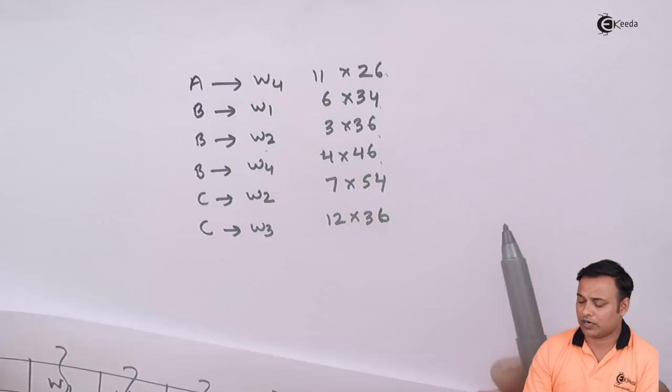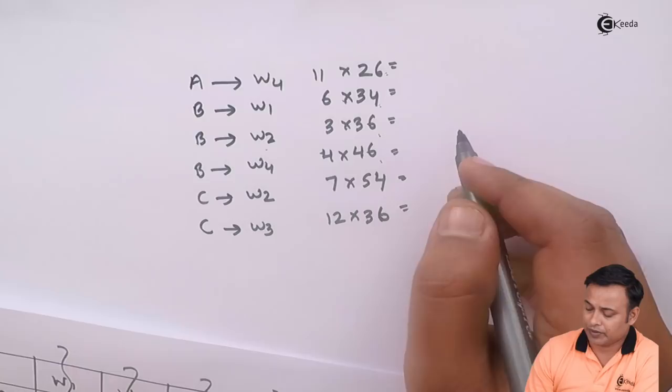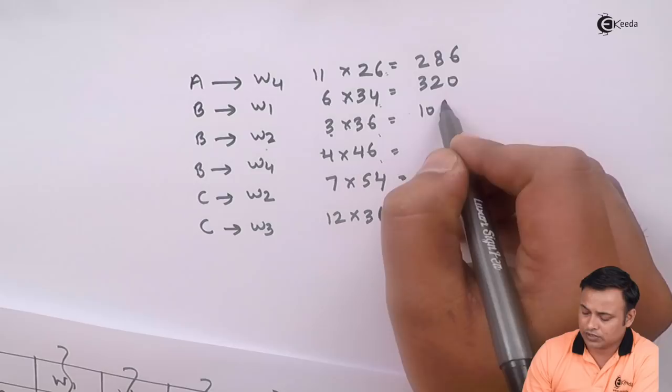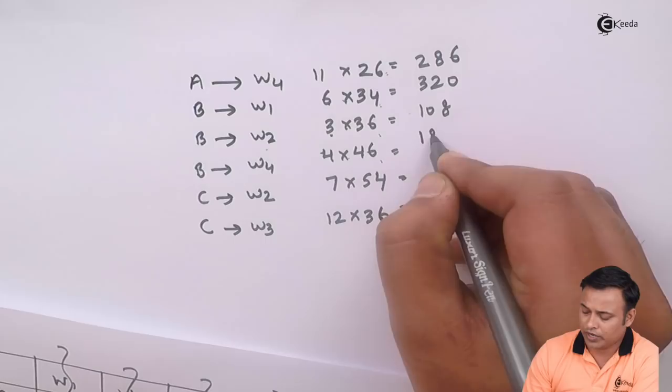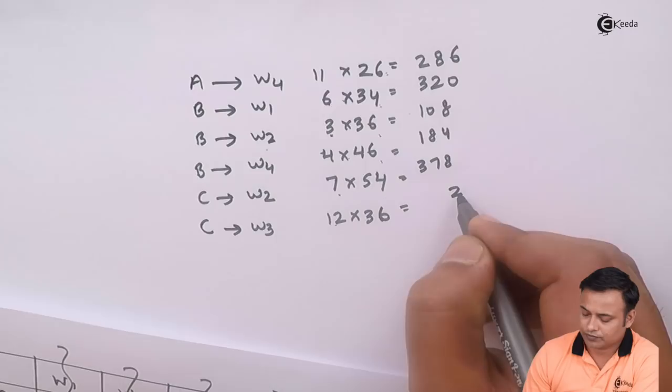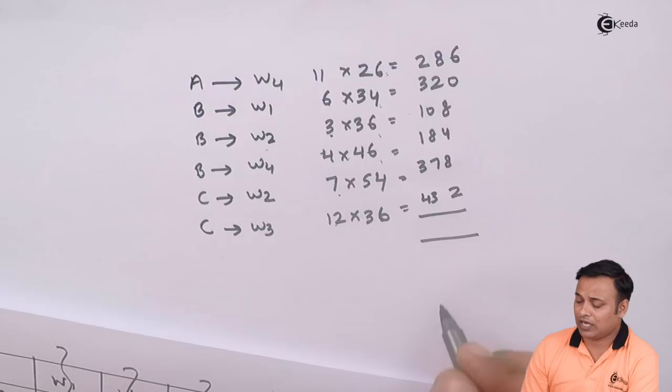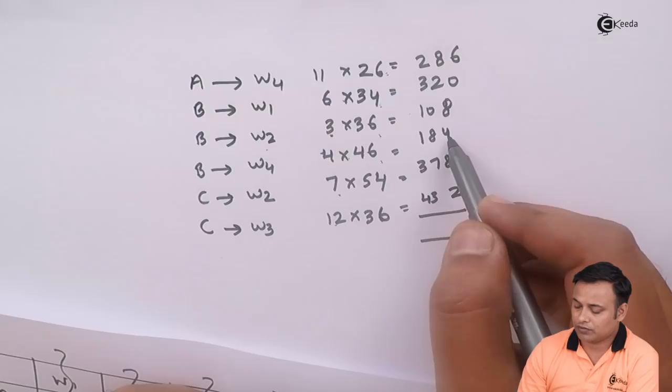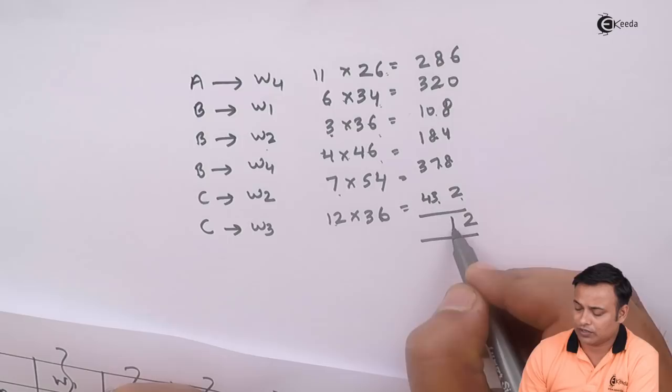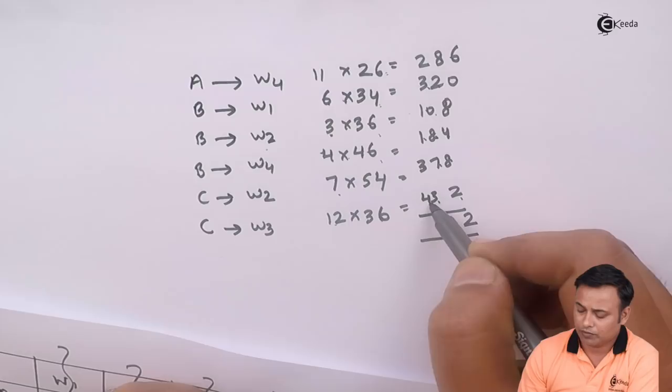We are done with all the transportation allocation. We simply multiply this now: 11 into 26 is 286, 6 into 34 is 204, 3 into 36 is 108, 4 into 46 is 184, 7 into 54 is 378, and 12 into 36 is 432. At the end I will simply add this: 286 + 204 + 108 + 184 + 378 + 432 equals 1,708. This is my total shipping cost or transportation cost.